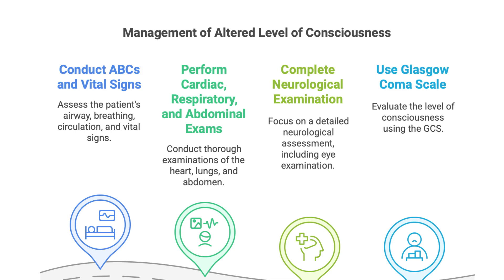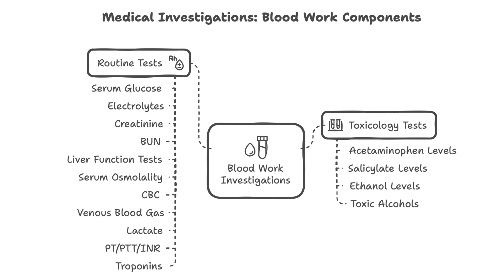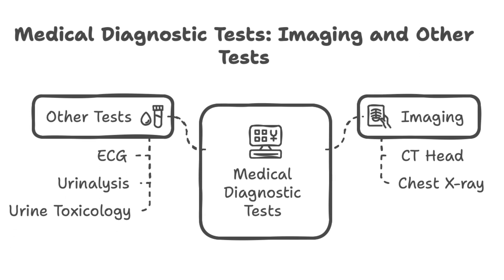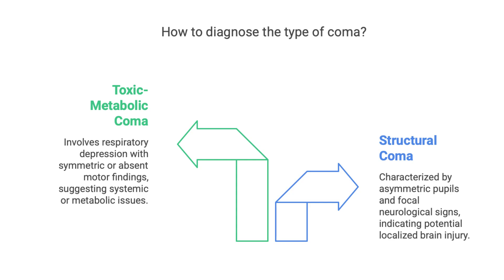We might also order blood tests to check for infections, drug overdoses, or metabolic imbalances, and imaging like a CT scan of the head to look for structural abnormalities like bleeding or tumors. It can sometimes be tough to differentiate a structural versus a toxic metabolic coma because the clinical picture can evolve over time — so we need to reassess frequently, especially early on.